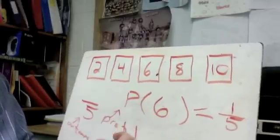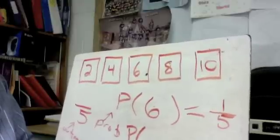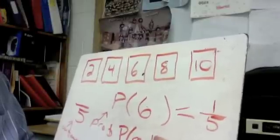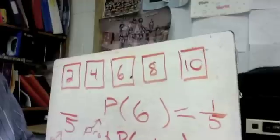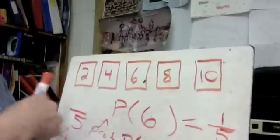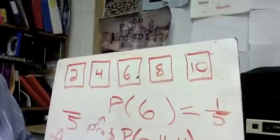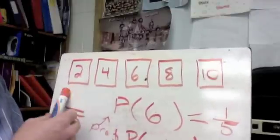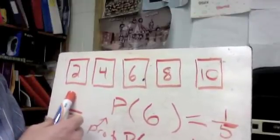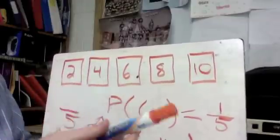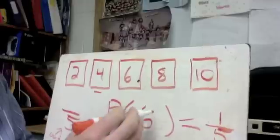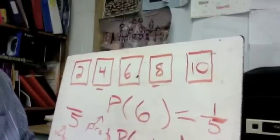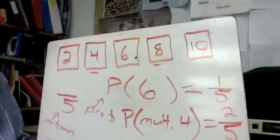Now if I ask a different question, let's say the probability of getting a multiple of four. So we know that the bottom number is still going to be five because we have five possible outcomes that we could get. Now we just need to find out what's our chances of getting a multiple of four. Two is a factor of four, not a multiple. So multiples of four would be counting by fours, four, eight, twelve, like that. So we've got a multiple of four here and we've got a multiple of four here. None of the other three are, so a multiple of four, we're going to have a two out of five chance to get that multiple of four.